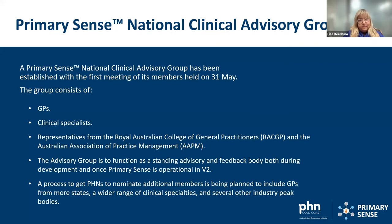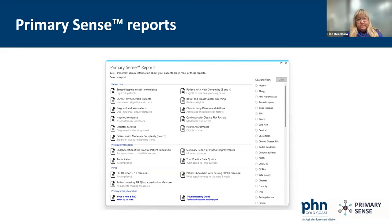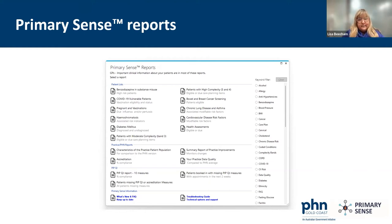The PIP QI reports are also available on the downloadable list — they're simple to use, keep track of practice activities, and are simple to submit. There are further resources on the Gold Coast PHN website for many PIP QI topics. You can also use the practice data in these tables to do your own self-audit for RACGP CME points. The Primary Sense National Clinical Advisory Group was established with its first meeting on 31st May.